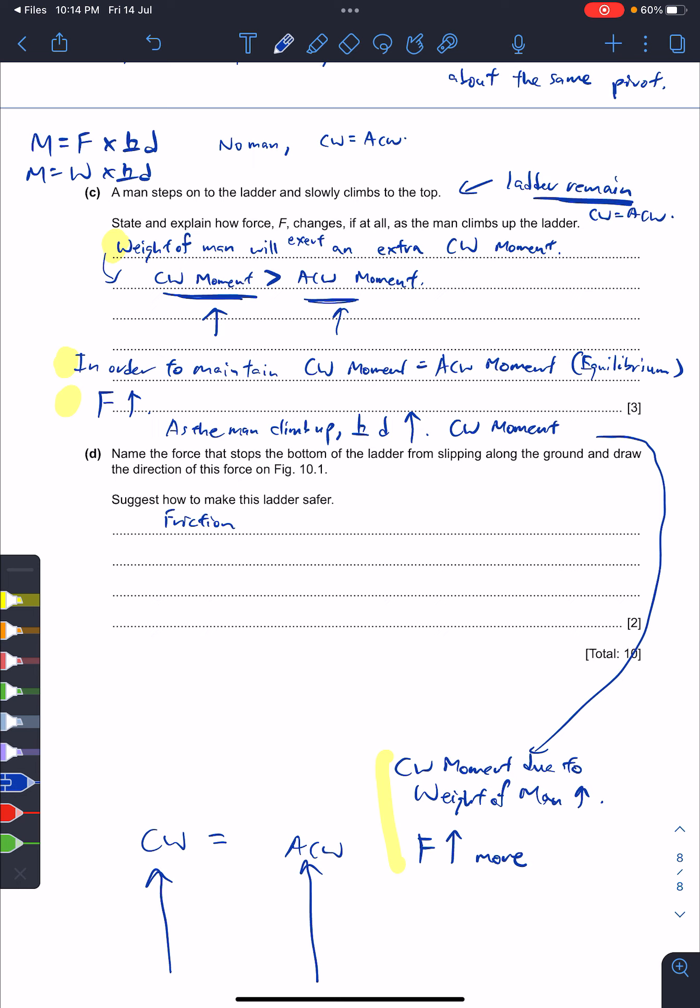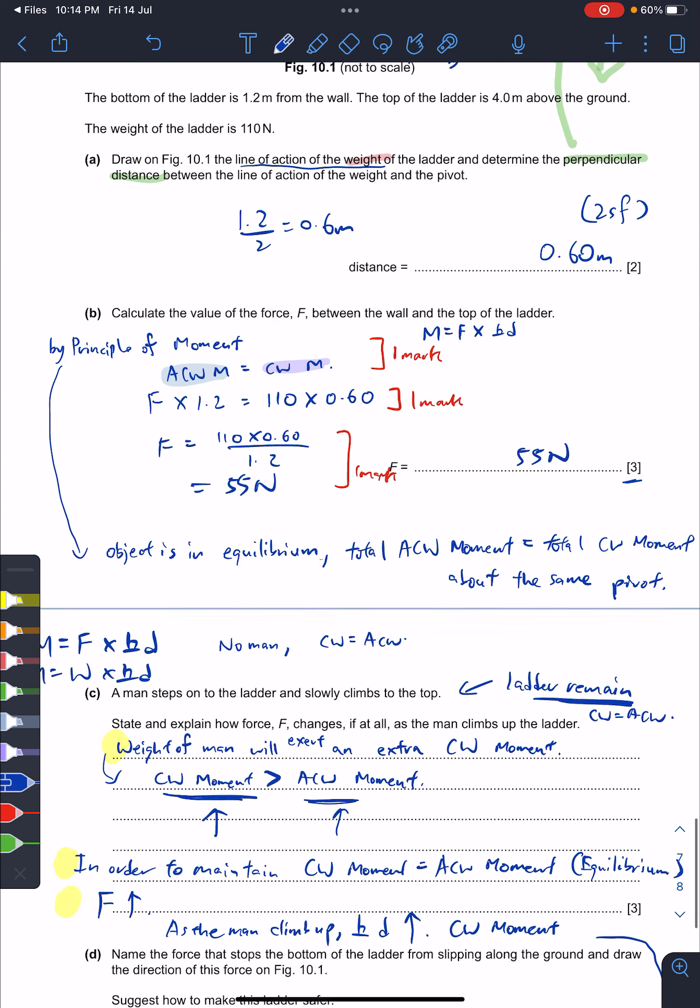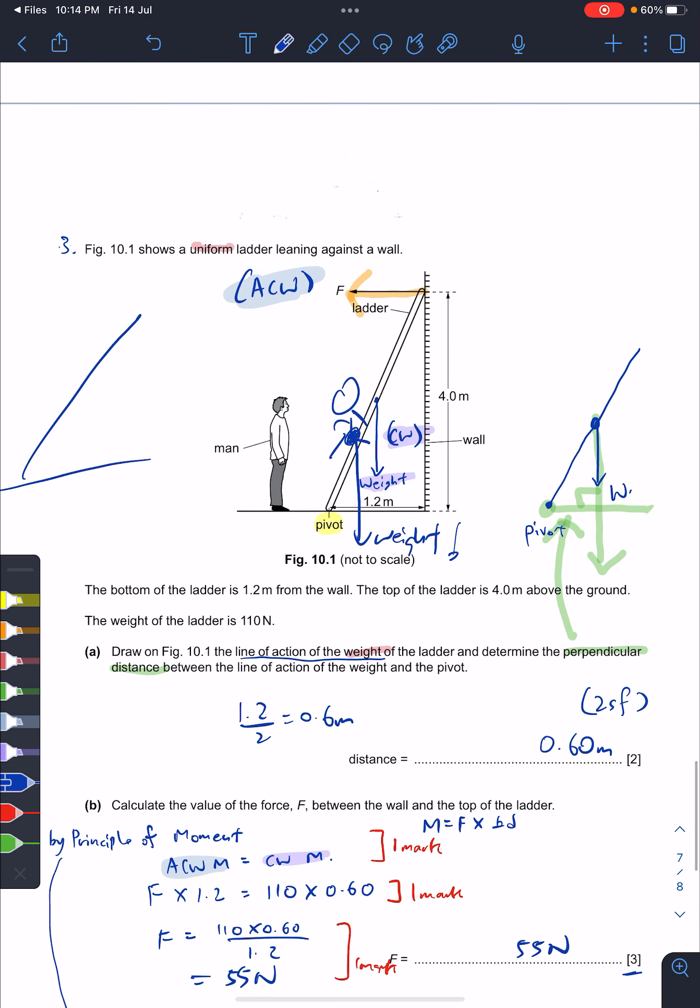Next one - draw the direction of the force. Very simple. Remember friction is against the motion, so it says this is to prevent it from slipping. So if the ladder is there and the ladder slips - the ladder originally is like this. If the ladder falls down, the ladder slips, it would move this way. So if it is moving here, friction is opposite, right? So your friction is here.